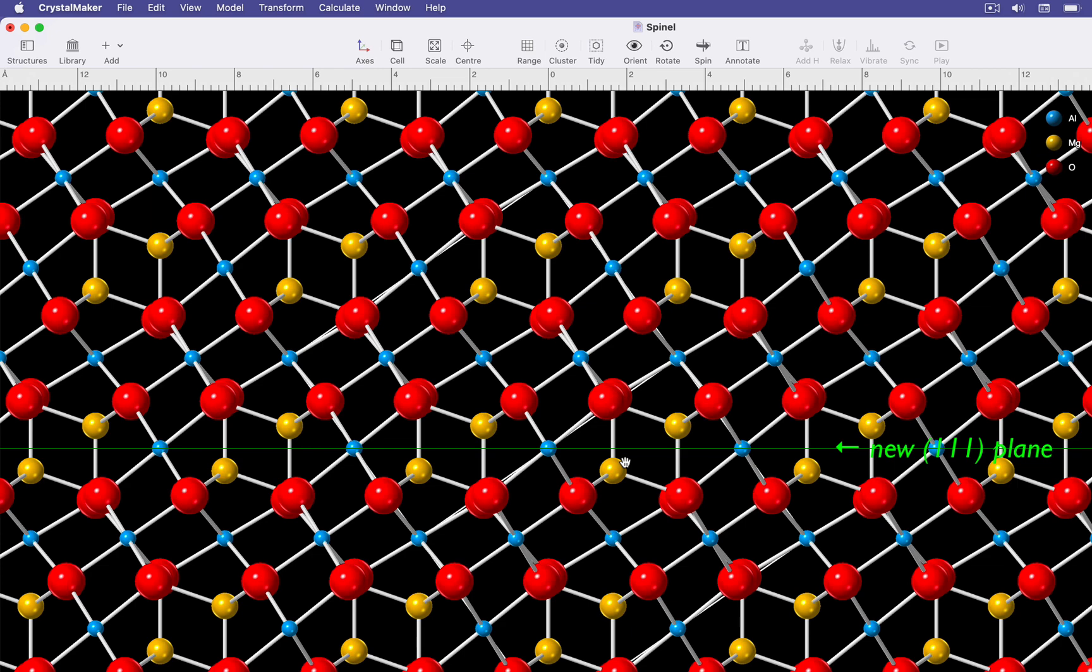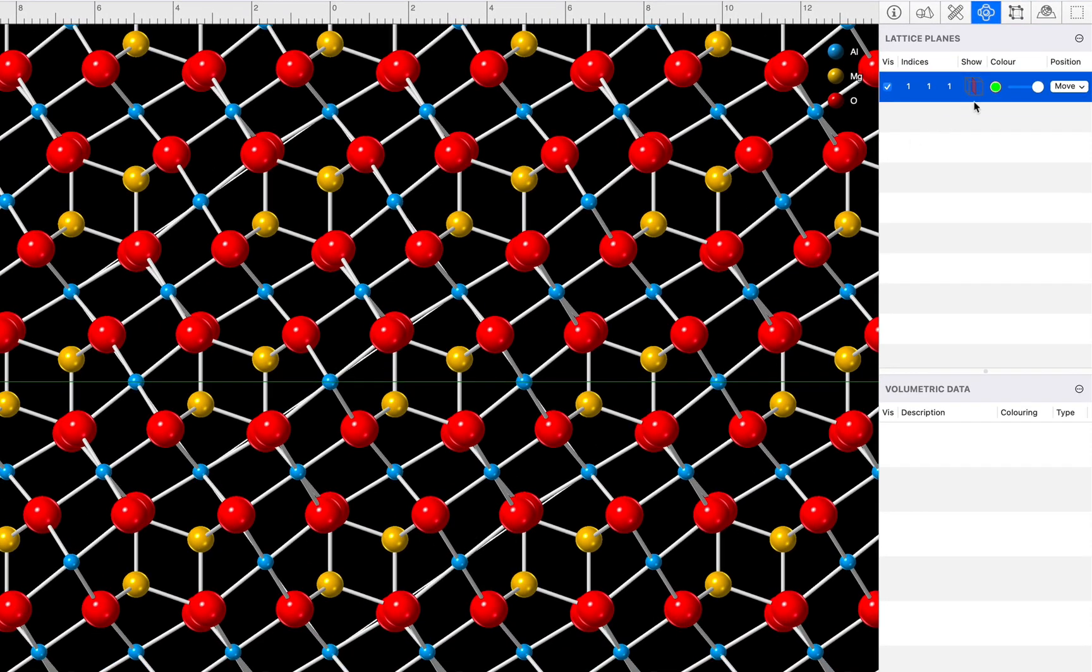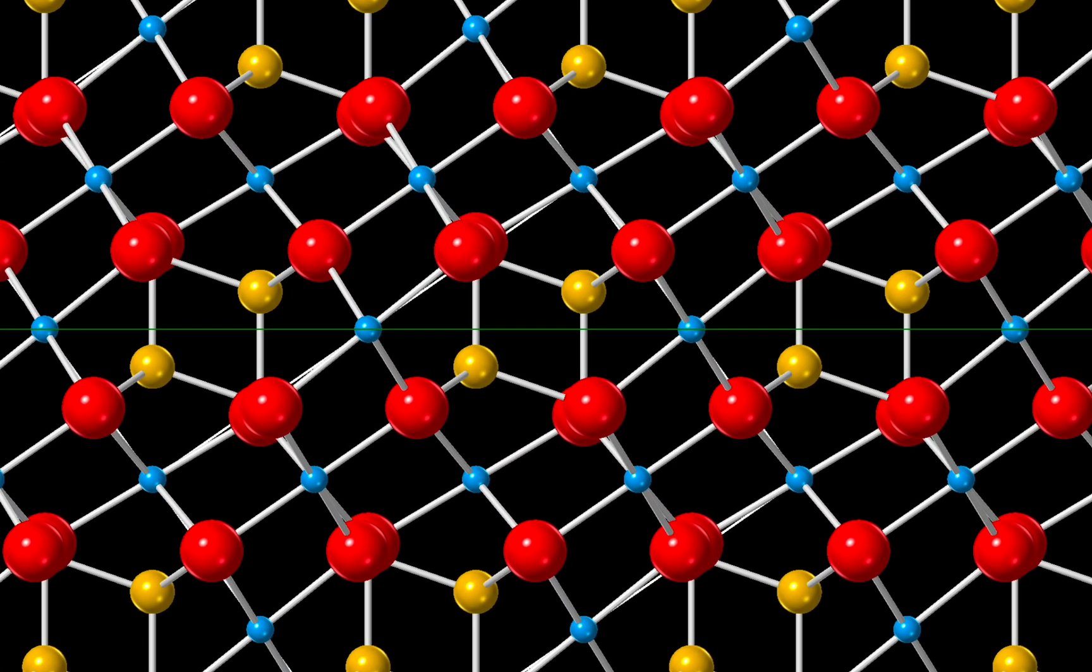We now need to move the plane to where we want to create the surface. To do this, we go back to the inspector and click the move button to reveal a slider. We can click and drag this to reposition the plane. I'm going to create my surface between a layer of oxygen atoms and a layer of magnesium, maybe about here.